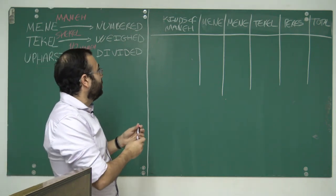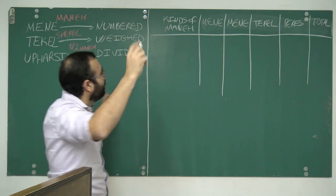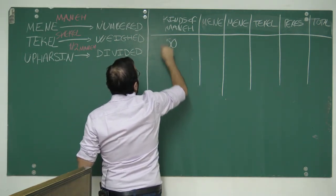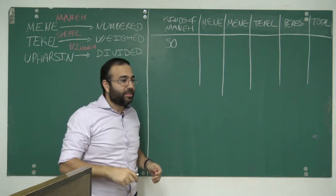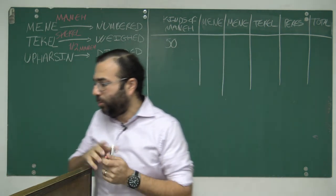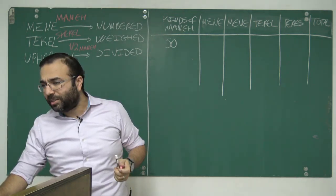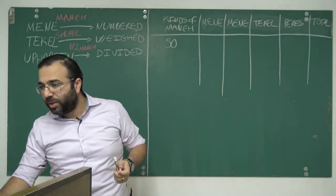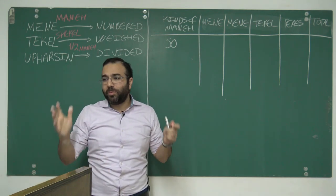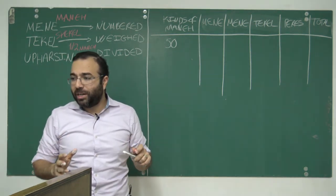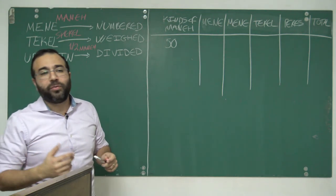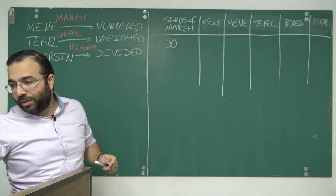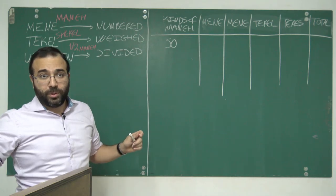I'll write it in red. Mene would be the money. Tekel is just another way of saying shekel. And Upharsin, since it means divided—Daniel tells us that—and how many parts is the kingdom divided? Two. So Upharsin would be half, presumably half a money.